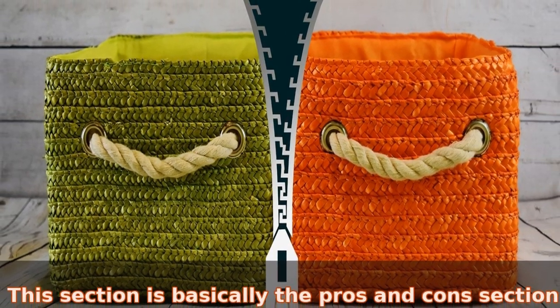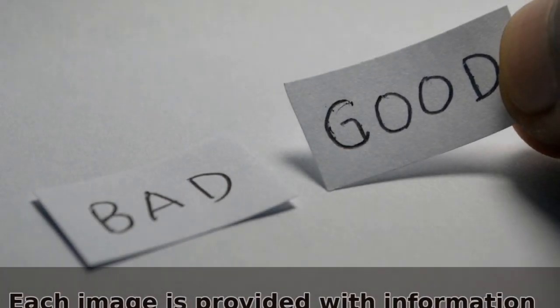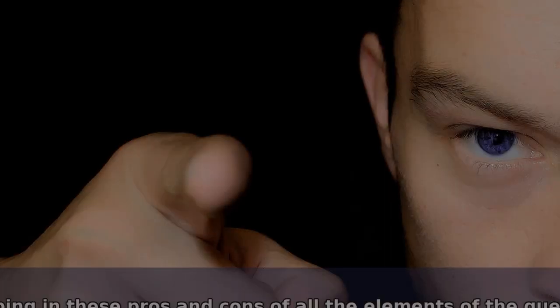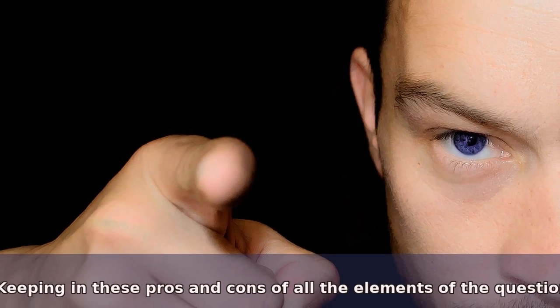you are supposed to choose the best choice from the drop down menu. This section is basically the pros and cons section. Each image is provided with information which is both good and bad in different aspects. Keeping in these pros and cons of all the elements of the question,